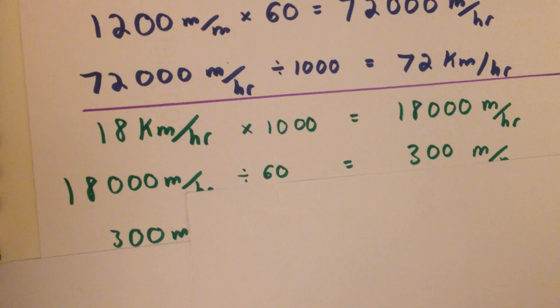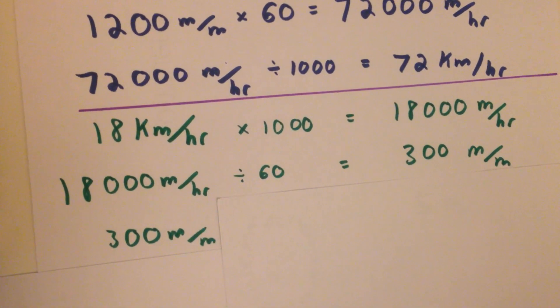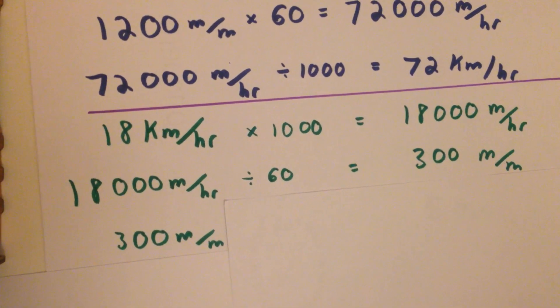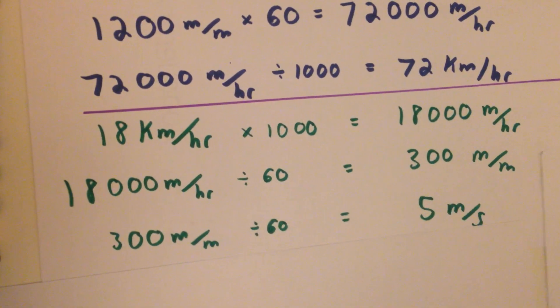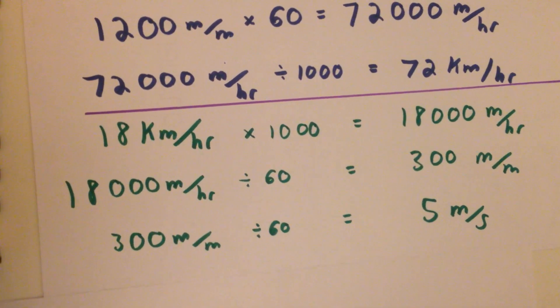To keep going, we're going to get into seconds. We're going to divide by 60 again, and get our final answer: 5 meters per second.